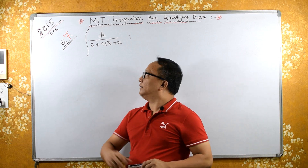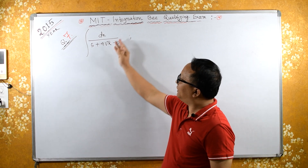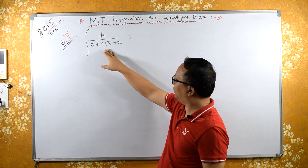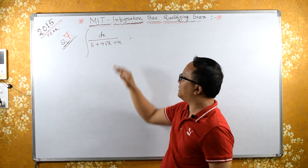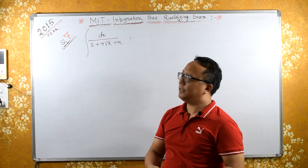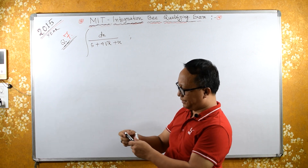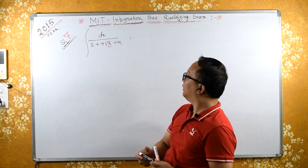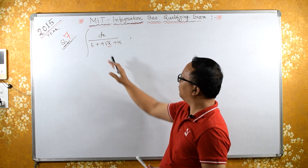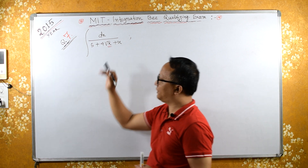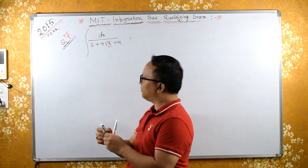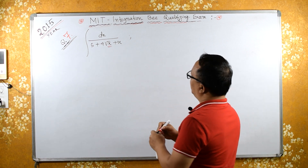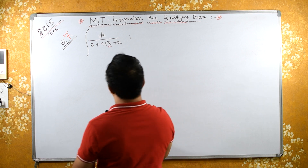Welcome back. Now this integral — integral of 1 upon 5 plus 4 root x plus x. Let's concentrate on this part. We need to remove the root x, so let's try substitution.